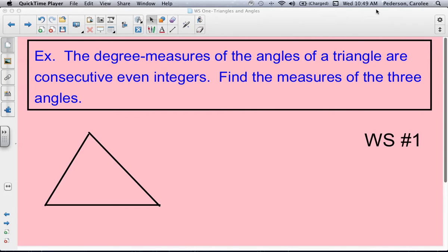This is worksheet number one, part two. Go ahead and write this problem down. The degree measure of angles of a triangle are consecutive even integers. Find the measures of the three angles. And then I have a picture of a triangle.